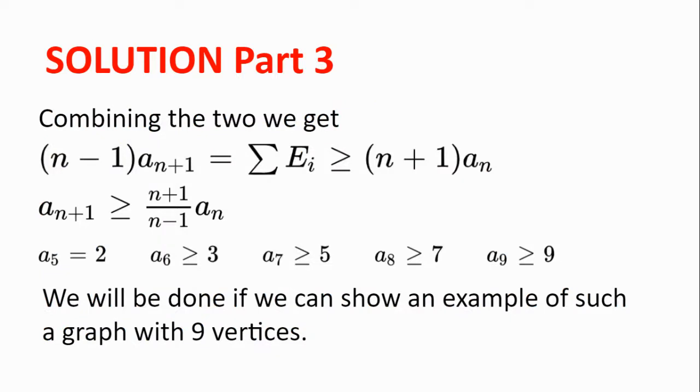Now combining these two results, we get (n-1) multiplied by a_{n+1} equal to the sum of all the E_i's, which is greater or equal to (n+1) multiplied by a_n. Rearranging, we get a_{n+1} is greater or equal to (n+1) divided by (n-1) multiplied by a_n.